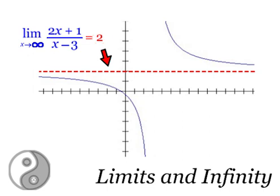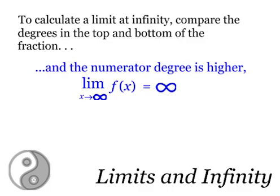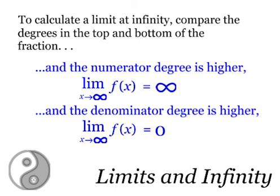Now what happens if these degrees are unequal on the top and bottom of the fraction? Well, if the denominator's degree is higher then the limit is zero. But if the numerator's degree is higher, the limit doesn't exist because it's infinity.